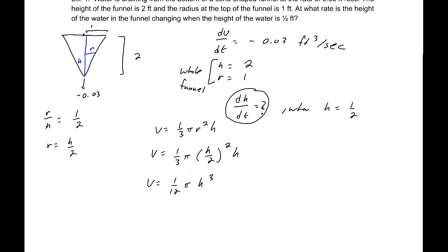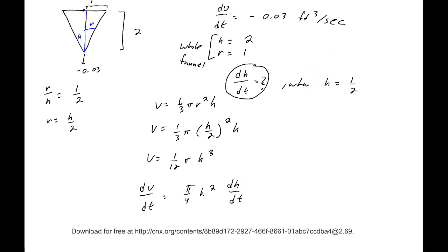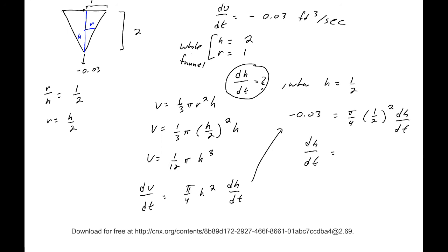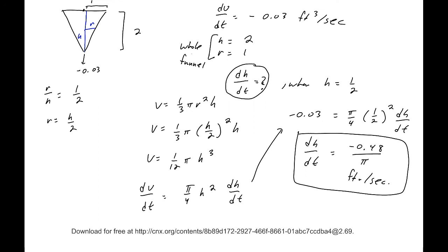Taking the derivative: dv/dt equals pi over 4 times h squared times dh/dt. At our particular moment the height is 1/2 and dv/dt is negative 0.03. Plugging in: negative 0.03 equals pi over 4 times (1/2) squared times dh/dt. Solving that equation, we get dh/dt equals approximately negative 0.48 over pi feet per second — that's how fast the height of the water level is changing.